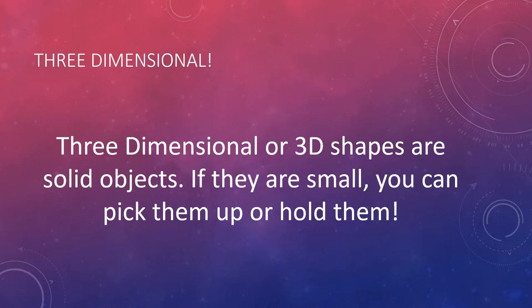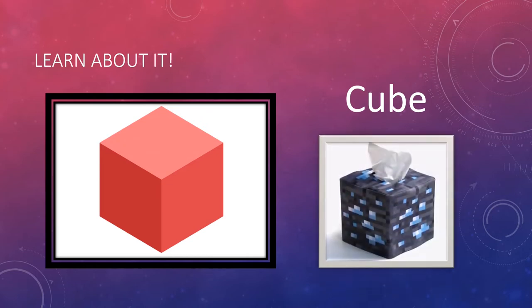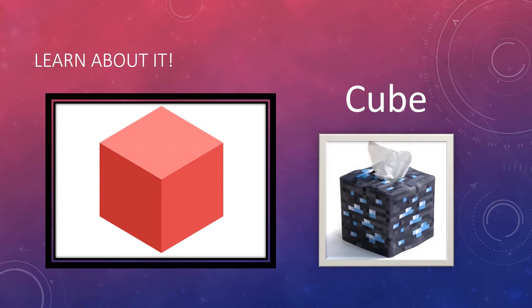Three dimensional or 3D shapes are solid objects. If they are small, you can pick them up and hold them. Let's take a look at a few and see if you can think of some real objects that fit the descriptions. This is our first one. Do you know what shape this is? It's a cube. Can you think of some objects that look like this? What are some of the characteristics or ways that you can describe a cube? My example is a tissue box that looks like this. Are all tissue boxes cubes? I don't think so.